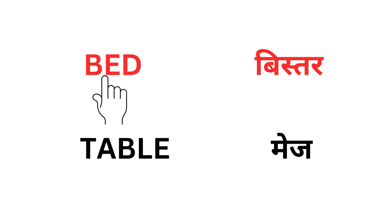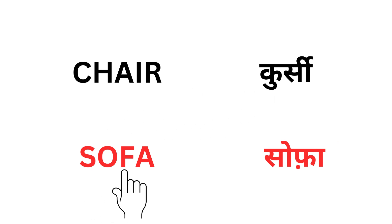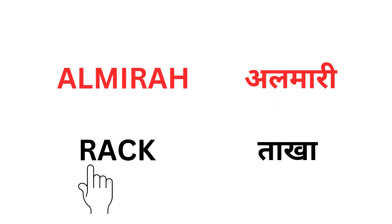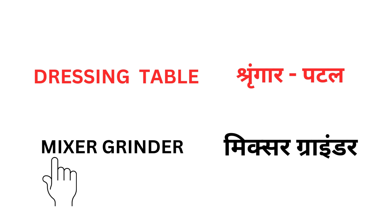Bed — Bistar. Table — Mej. Chair — Kursi. Sofa — Sofa. Almira — Almari. Rack — Takha. Dressing Table — Shringar Patal. Mixer Grinder — Mixer Grinder.